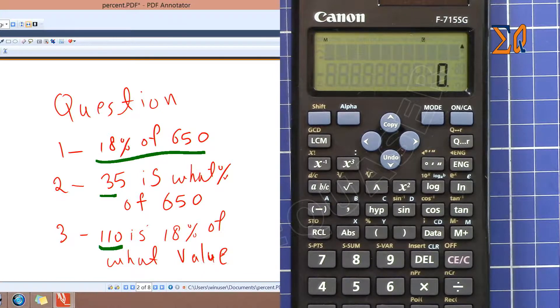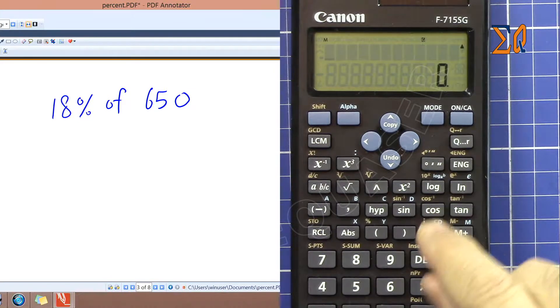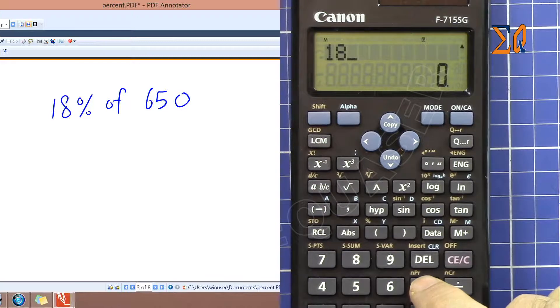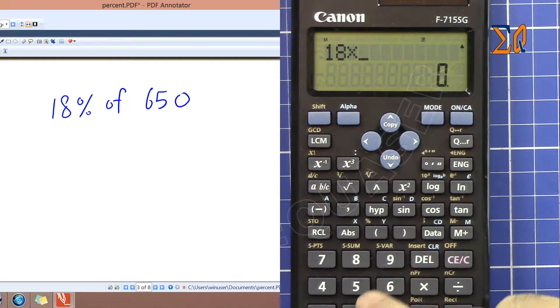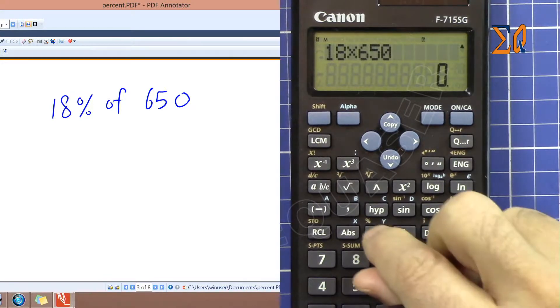So we have three ways to do the percent. Let's go with a very simple one. The first question would be 18% of 650. So to find 18% of 650, we do 18 and then multiply by 650 and then shift and then this close parenthesis.